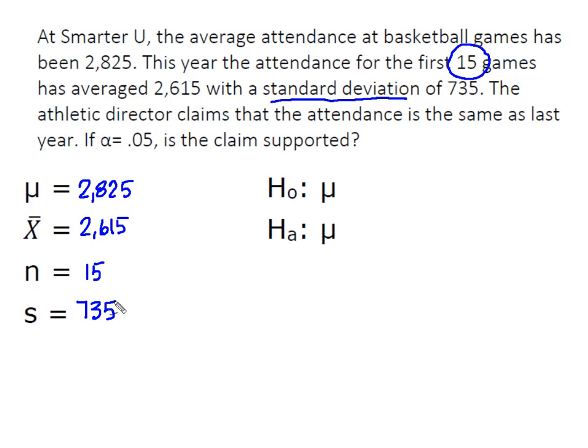Let's set up our null and alternative hypotheses. The established value of the mean is 2,825 and the athletic director claims that it is the same as last year, which means our alternative sign is not equal to.